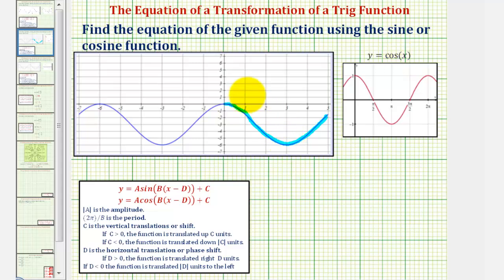Notice how the maximum function value is zero, and the minimum function value is negative six, which means our midline would be y equals negative three, which means we have a shift down three units from the basic cosine function, and therefore, C is equal to negative three.